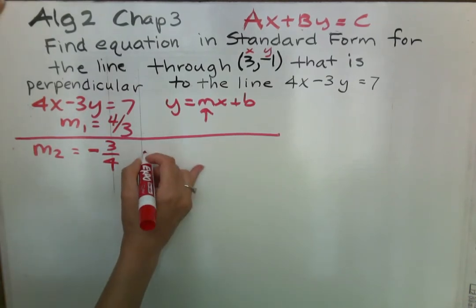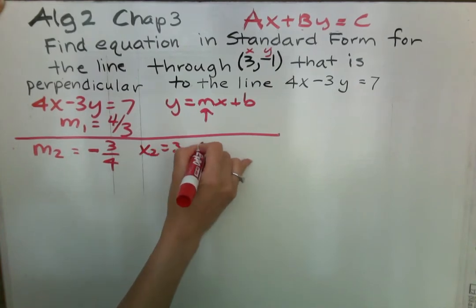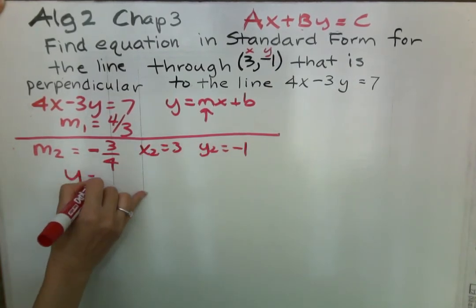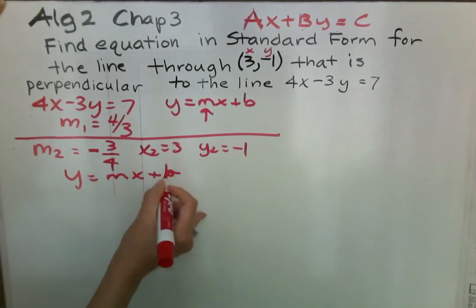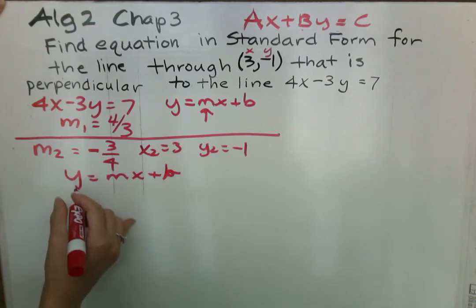Now we're going to plug it into our formula. So we know our x is 3 and our y is negative 1. y equals mx plus b. I use this equation because we only have a slope and we have the points, so we can plug into this equation.